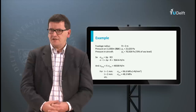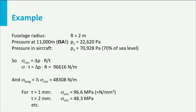To get an idea of the magnitude of these stresses, consider a small aircraft of about 50 to 100 passengers, with a fuselage diameter of 4 meters, so a radius of 2 meters, flying at 11,000 meters. The outside pressure is just over 22 kPa. The pressure inside the cabin is maintained at nearly 71 kPa, which is 70% of the sea level value. Using these values, the stress times thickness is over 96,000 N per meter for the hoop stress and half that value for the longitudinal stress.